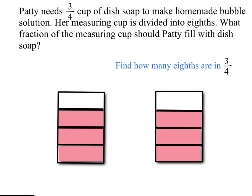Let's take a look at our first question. Patty needs three-fourths cup of dish soap to make homemade bubble solution. Her measuring cup is divided into eighths. What fraction of the measuring cup should Patty fill with the dish soap? We need to ask ourselves: her cup is divided into eighths and she needs three-fourths — so how many eighths are in three-fourths?